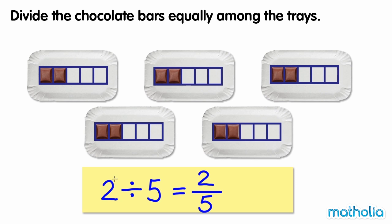When dividing two whole numbers, the quotient can be expressed as a fraction that has a numerator equal to the dividend and a denominator equal to the divisor.